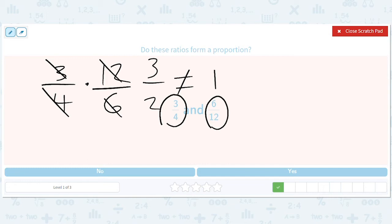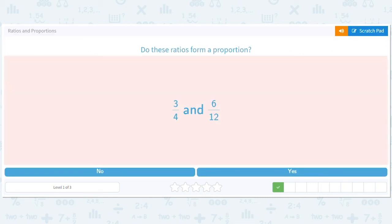Another way of seeing is that you have to multiply three by two to get six, but you have to multiply four by three to get twelve. Those have to be the same number for these to be in proportion. So that's another way you could see it. So the answer is no either way.